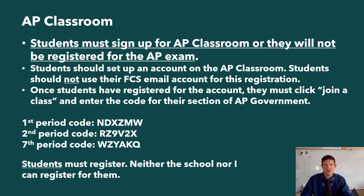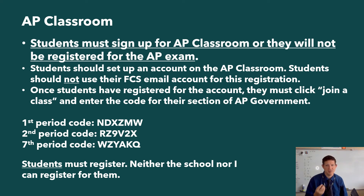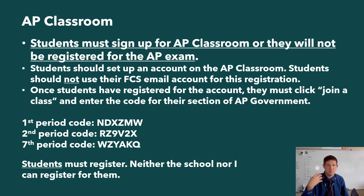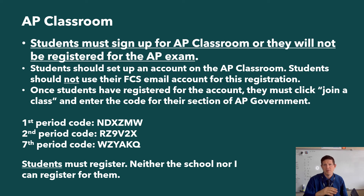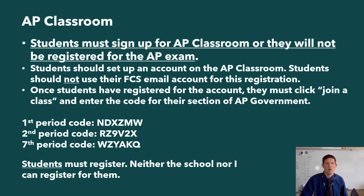For first period, here's the code. For second period, here's the code. For seventh period, here's the code. If they register for the wrong class, I can move them, but I cannot register them and neither can the school. If a student does not have an AP Classroom account or has not registered for any section, none of us — the school, Fulton County Schools, the district, or the teacher — can register the student for them. The College Board is very strict with its deadlines. If a student misses the registration deadline, which I believe is in early October, they will not be able to register for and take the exam. It is imperative that students who intend to take the AP exam in May register for AP Classroom and join my class using these codes.